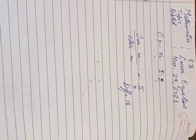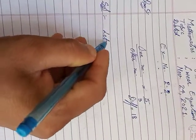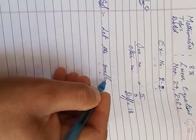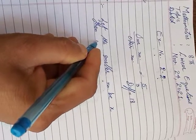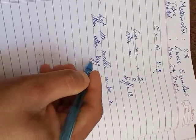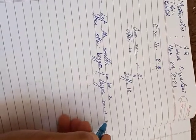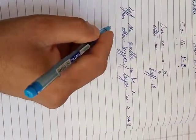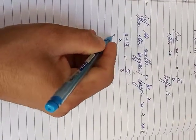Let the smaller number be x. Then the other larger number can be set up from the ratio. The larger number is expressed in terms of x, and we set up the equation using cross multiplication: 3 into x plus 18.